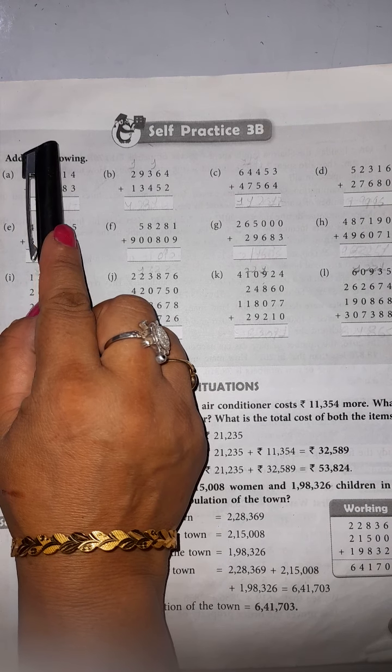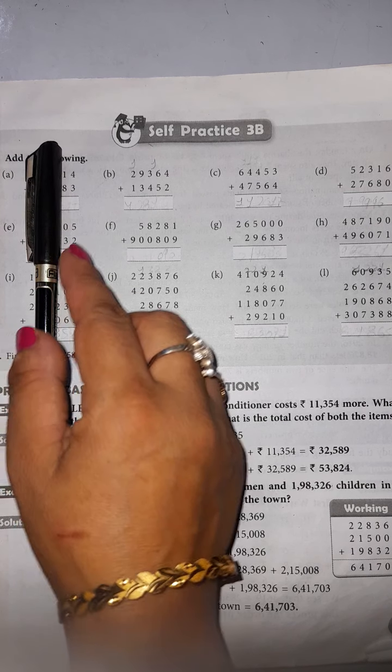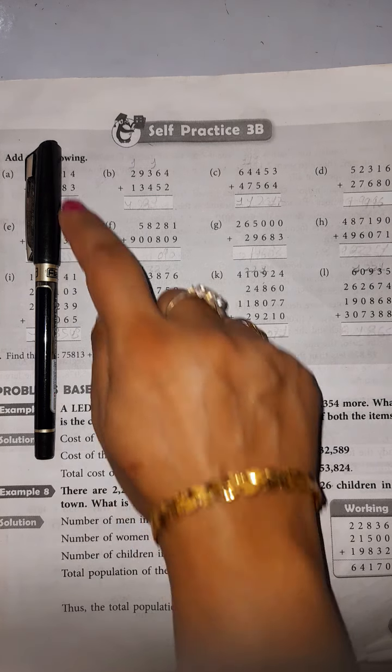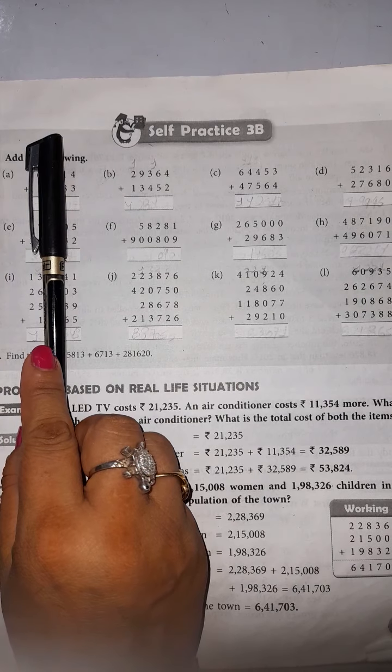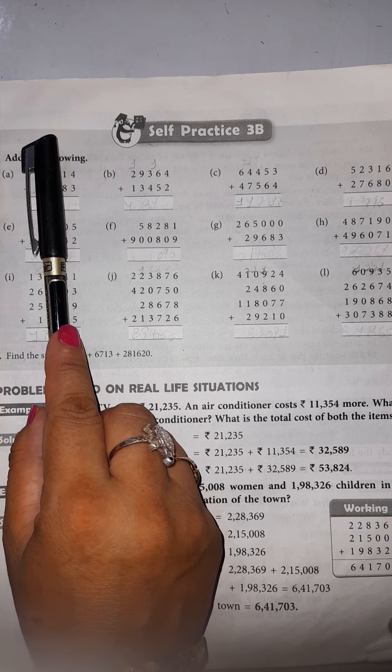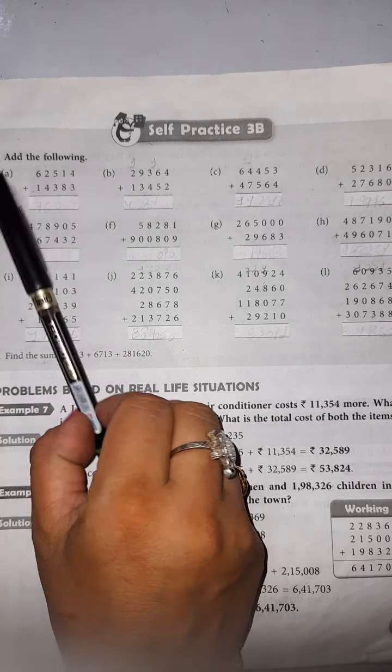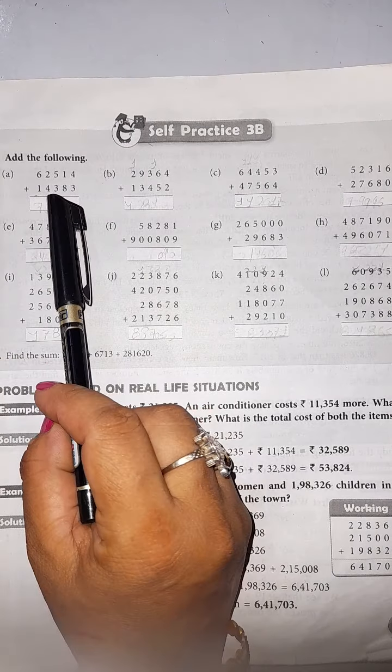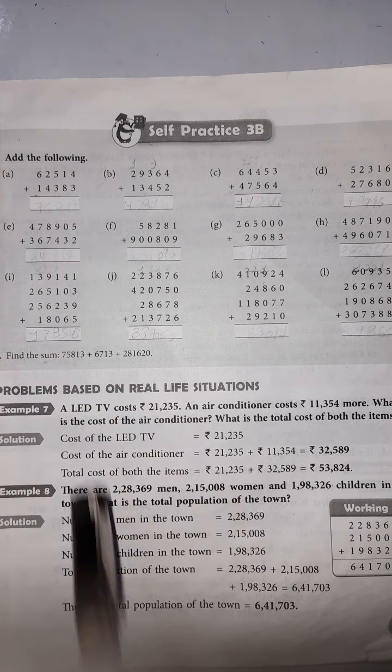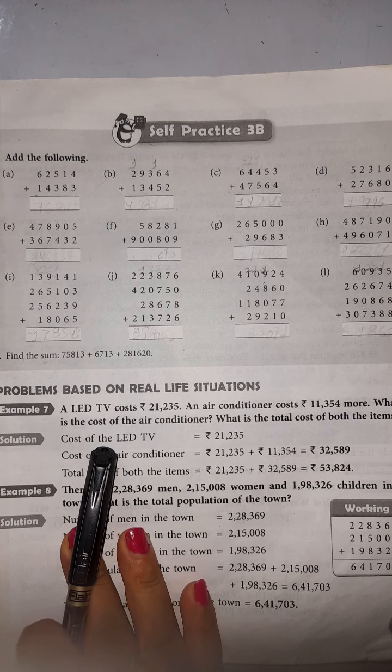When you were in smaller classes, you were given single digit addition, like 4 plus 3. You have only 4 and 3. Now add both the numbers, 4 plus 3 equals 7. Next one, 8 plus 1 equals 9. Next one, 5 plus 3 equals 8. 4 plus 2 equals 6, and 6 plus 1 equals 7. Like this, you will solve this exercise in your book only.